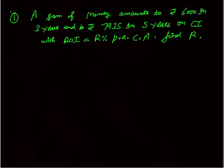First question: a sum of money amounts to Rs. 6000 in three years, and Rs. 7935 in five years on compound interest at R% per annum compounded annually. You need to find the value of R. As I told you, we have to write the minimum — so here is how I will solve this in an exam.